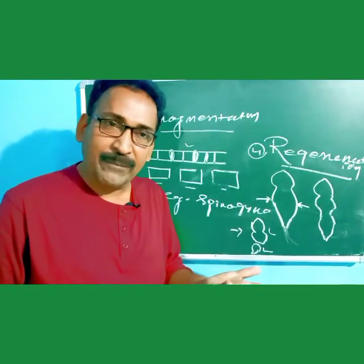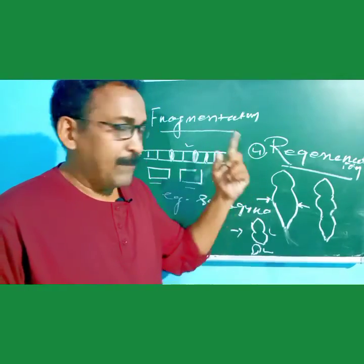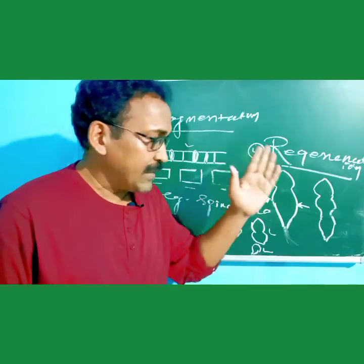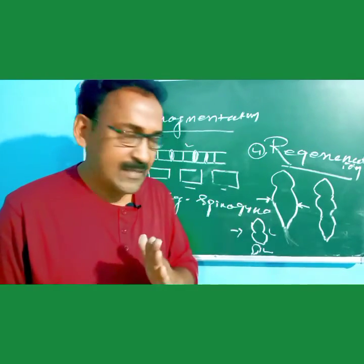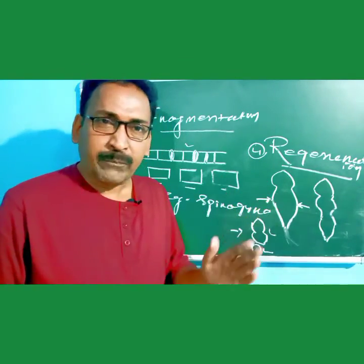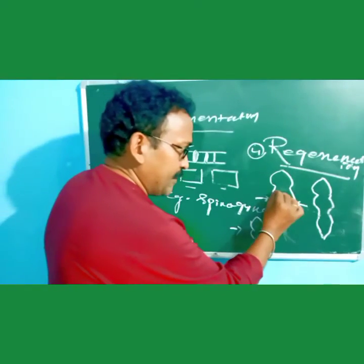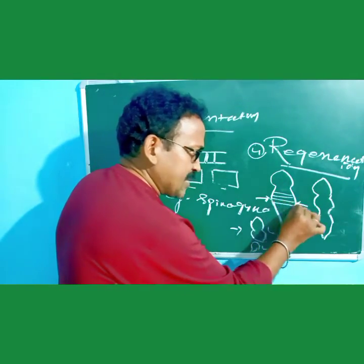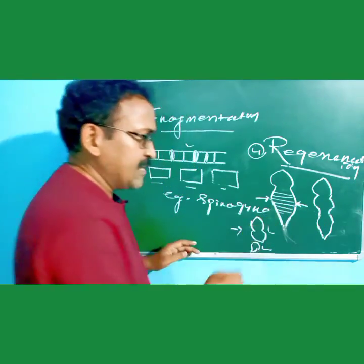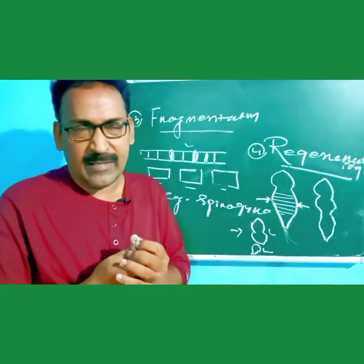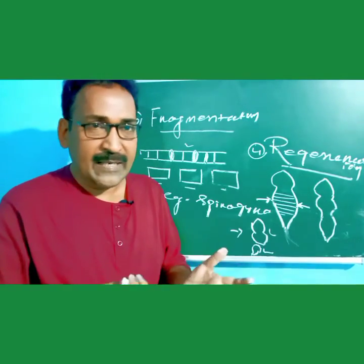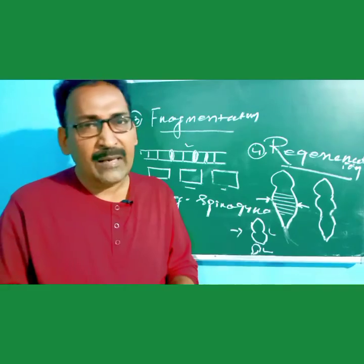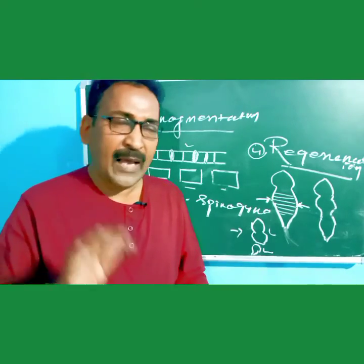This mother body gives rise to two daughter pieces, which is called binary fission. In the case of sponges, regeneration takes place: if the sponge gets fragmented into different pieces, each piece forms a new organism. That is known as regeneration, and it also happens in Planaria. Thank you.